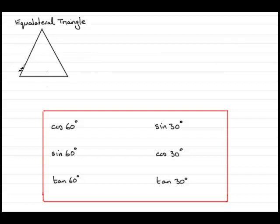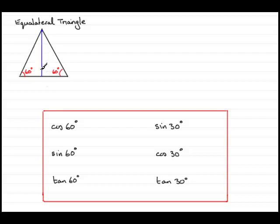If it's got all sides equal, all three angles are going to be equal and they're going to be 60 degrees, totalling 180 degrees. If I draw a line down through the middle, it's going to cut that angle of 60 degrees in half, so this angle in here is going to be 30 degrees.